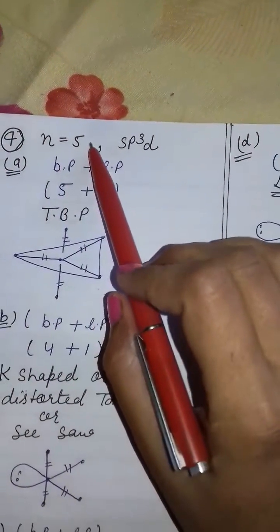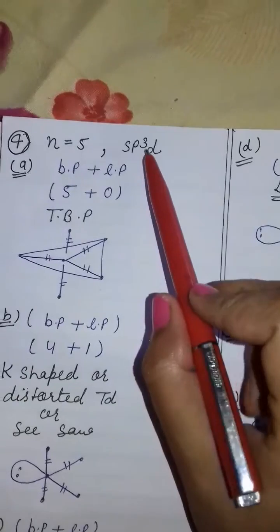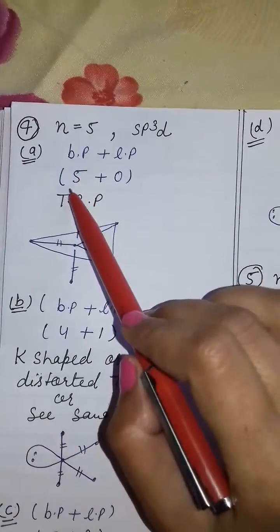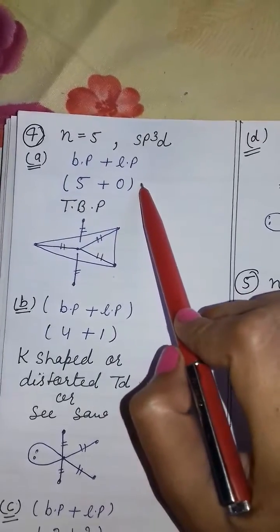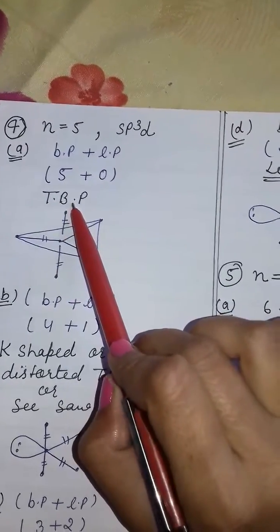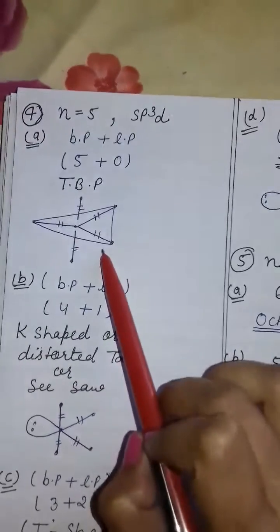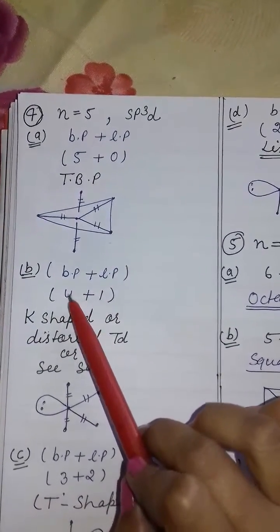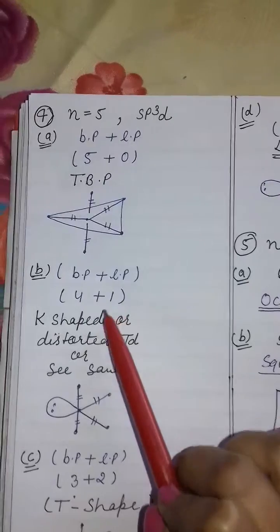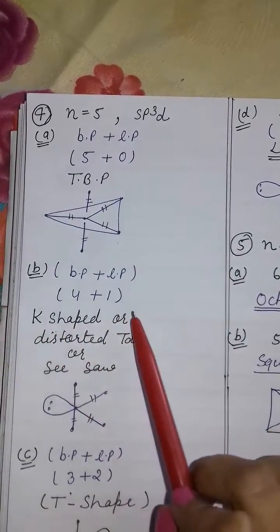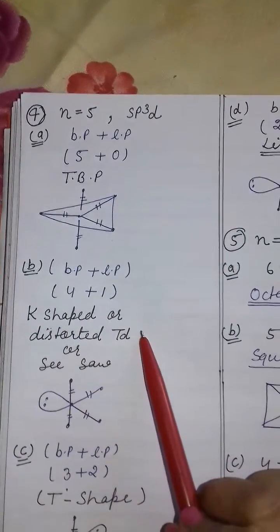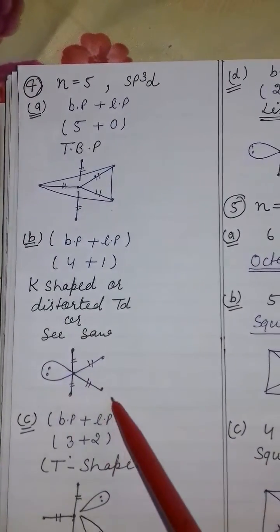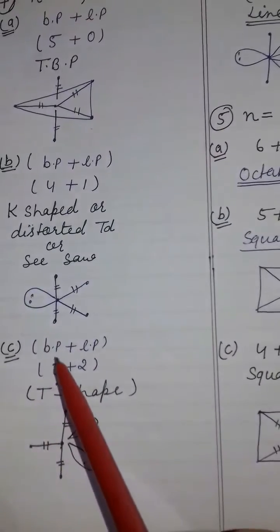If n is equal to 5, then hybridization will be sp3d. If bond pairs are 5 and there is no lone pair, then shape is TBP — tetragonal bipyramidal. If bond pairs are 4 and lone pair is 1, then shape is seesaw or distorted tetrahedral, also called k-shape.